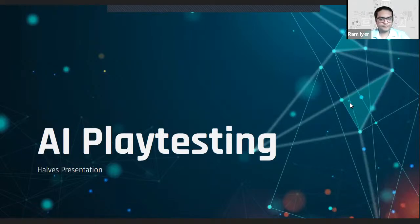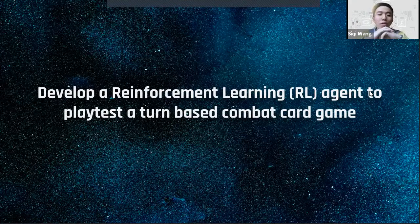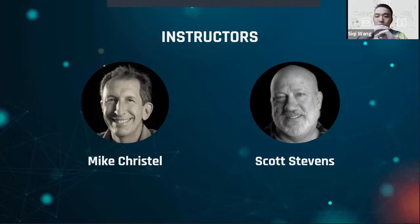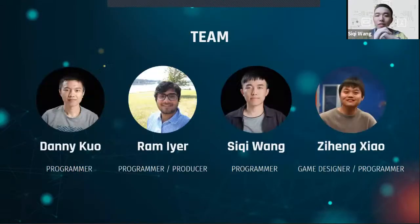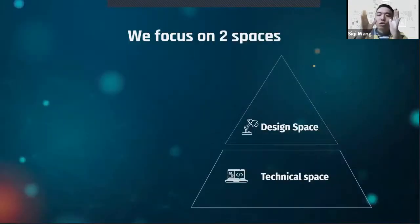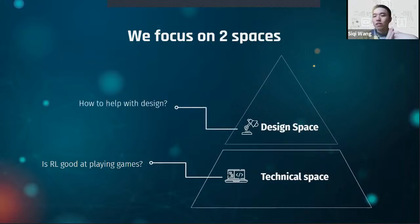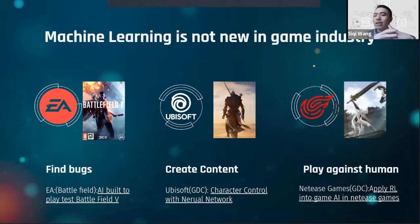Hello everyone, we are team AI Playtesting. Our goal is to develop a reinforcement learning agent to playtest a turn-based combat card game, and if successful, we try to help with game balance. Our instructors are Mike and Scott. We focus on two spaces: the tackling space — machine learning is very good at some tasks like image detection — and we want to know if it's also good at playing games.